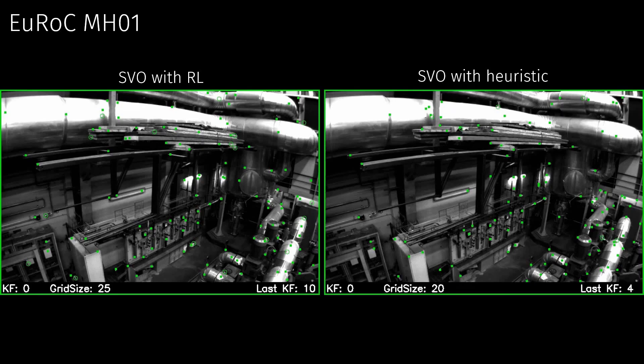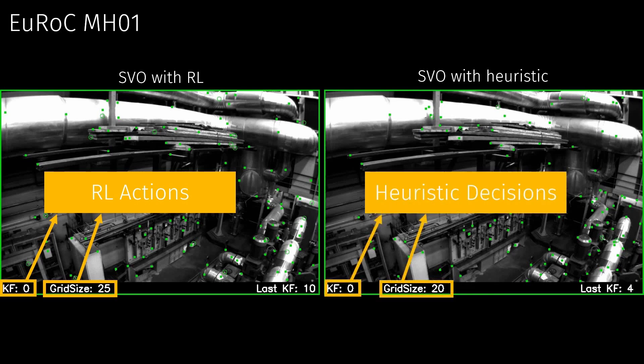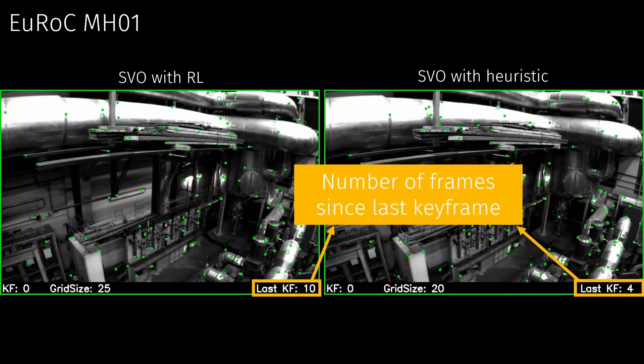In the following, we visualize the learnt behavior of our RL agent and compare it against the heuristic-based VO baseline. For the RL agent, we visualize the action of selecting the current frame as a keyframe and also show the predicted grid size for the current frame. For the baseline, the keyframe selection is based on heuristic rules, and the grid size is fixed to 20 pixels. Finally, we also visualize the number of frames since the last keyframe was inserted.